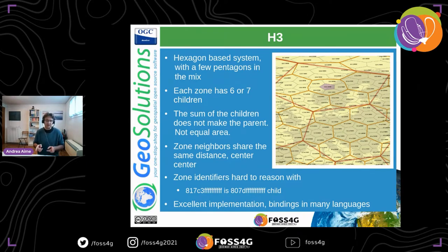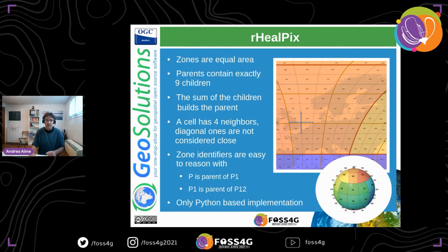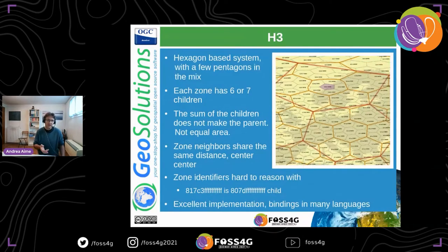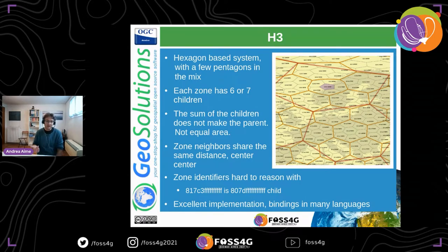However, H3 is equal distance — a property that rHEALPix does not have. If you take the distance between one cell and each neighboring cell in H3, they are all at the same distance. In rHEALPix, four cells share the same distance and the other four on the diagonal are farther away. So H3 is better suited for problems where distance between cells matters more than the area of the cell. The zone identifiers in H3 are hard to reason with because they are 64-bit integers encoded in hexadecimal.